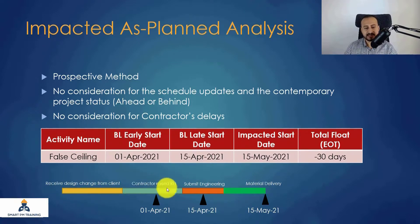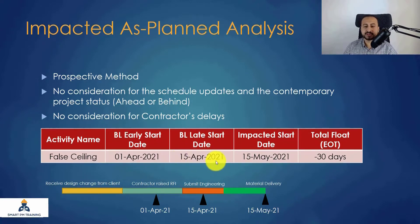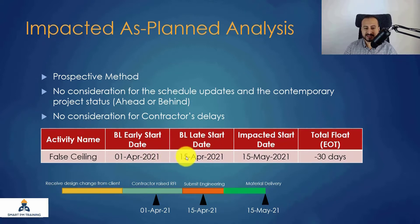For the Impacted as Planned analysis, let's say we have one activity: the false ceiling. The baseline early start date is April 1, 2021. The baseline late start date is April 15, 2021. The impacted start date is May 15, 2021. I have 15 days of float — that is why the late start date is April 15.